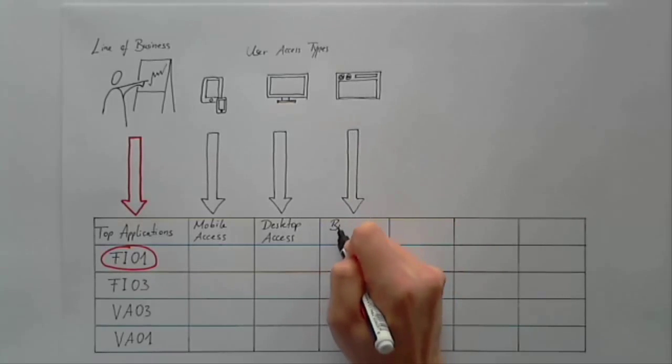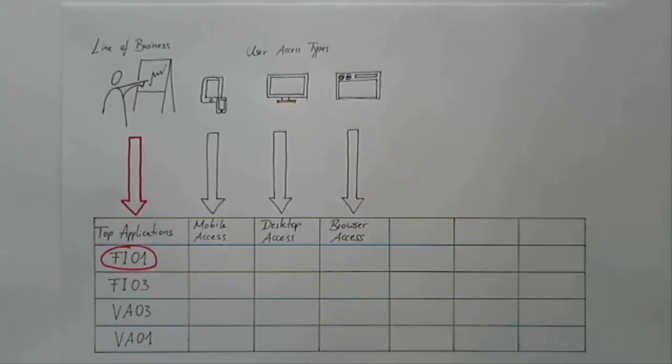You could also think of three columns if you have cases where multiple access channels have to be supported.